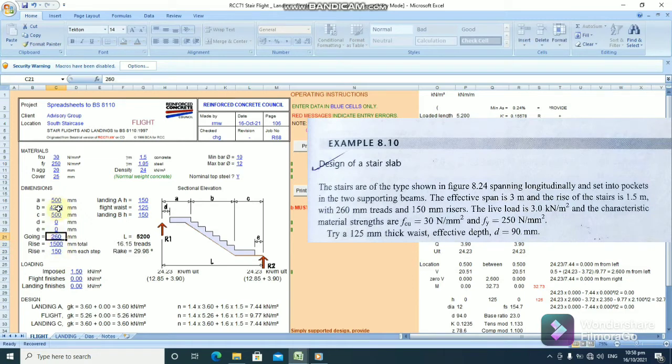Okay. Now, let's find the value of B. Now, the rise of the stair is 150 millimeters.